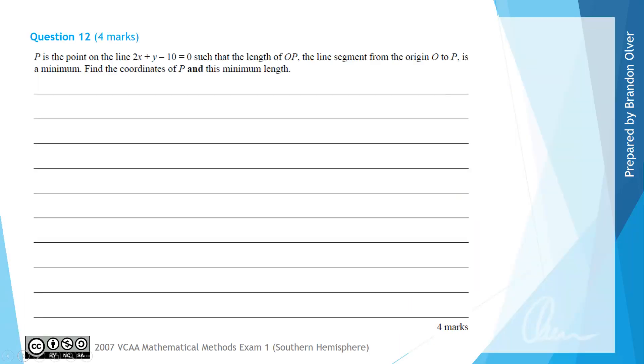So the point P is a point on the line 2x plus y minus 10 equals 0, such that the length of OP, the line segment from the origin O to the point P, is a minimum. Find the coordinates of P and this minimum length.